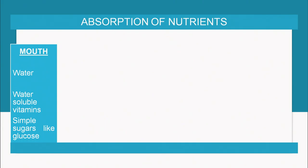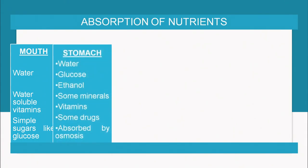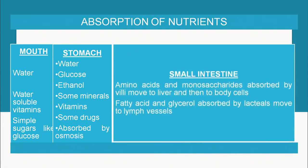We are now through with ingestion and digestion. We will move on to the third step — absorption of nutrients. The nutrients absorbed in the mouth are water, water-soluble vitamins, and simple sugars like glucose. In the stomach, water is absorbed, glucose is absorbed, ethanol, some minerals, vitamins, and some drugs. The process of absorption is by osmosis — from a region of high concentration to lower concentration.